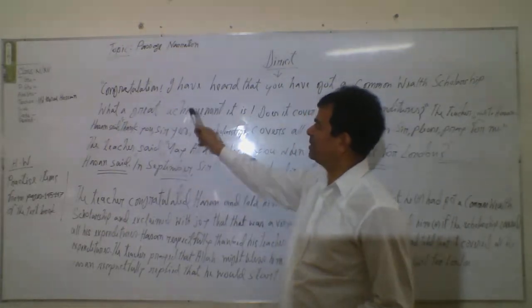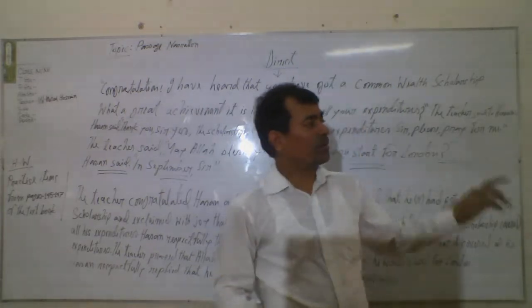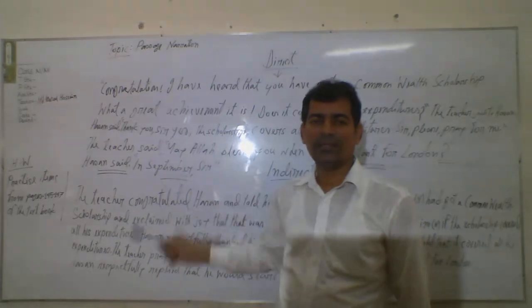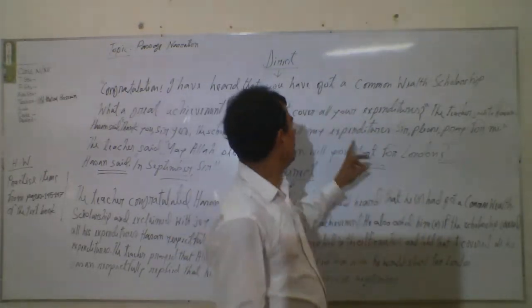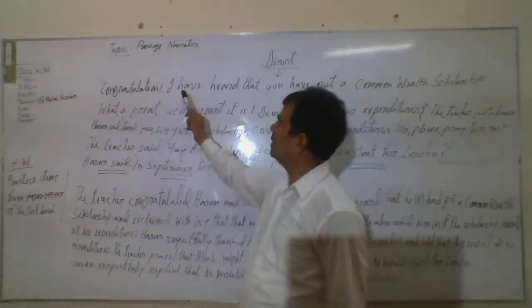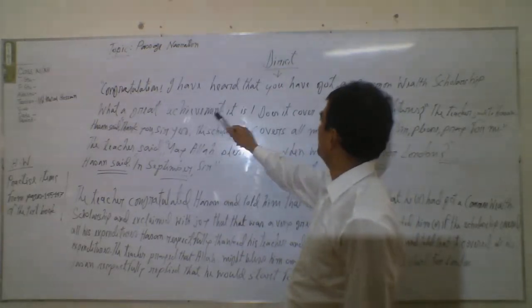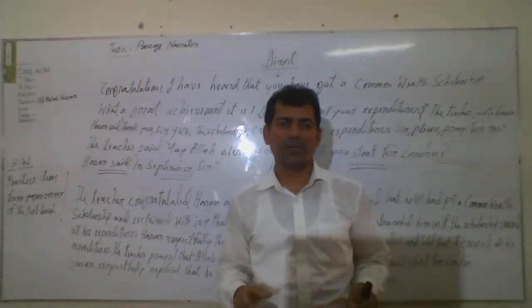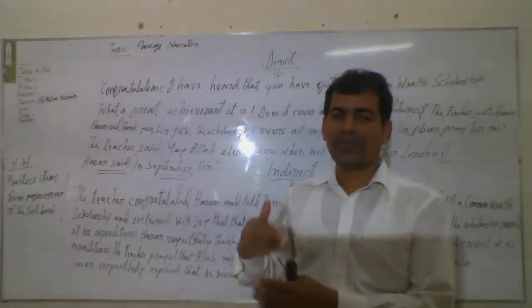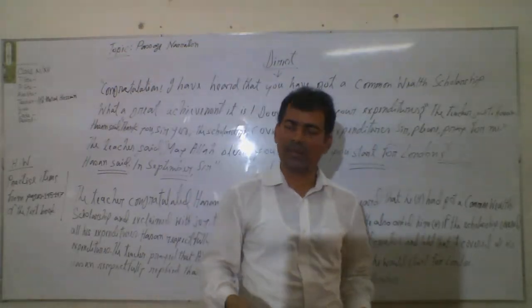Let us read out the passage first. 'Congratulations, I have heard that you have got a Commonwealth Scholarship. What a great achievement it is. Does it cover all the expenditures?' Here, the teacher has spoken four sentences together. So after writing the first sentence — 'congratulations' — we then write 'the teacher added that', 'further said that', and so on.